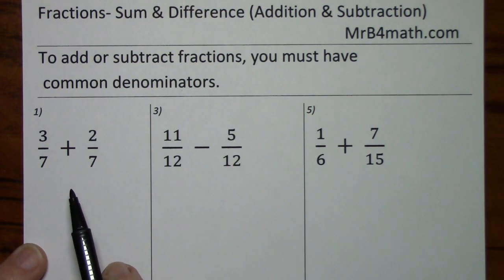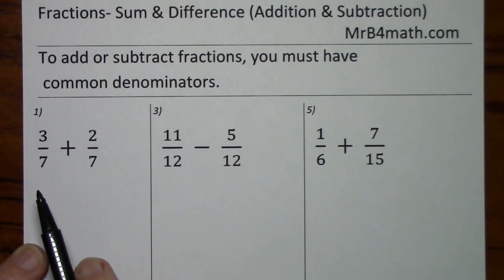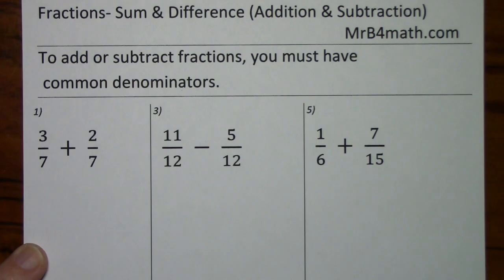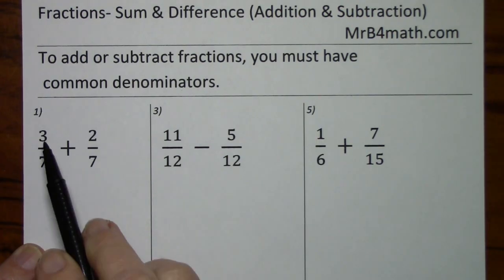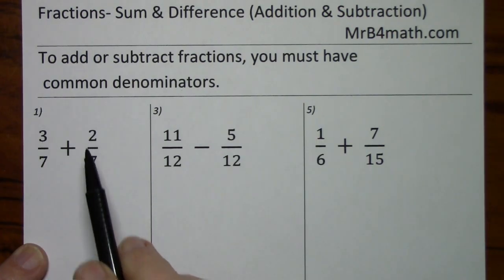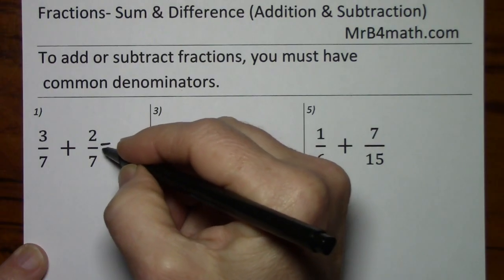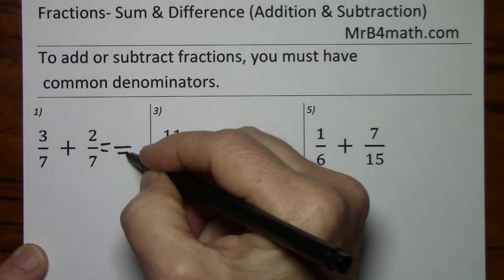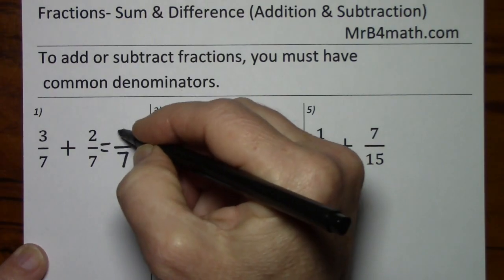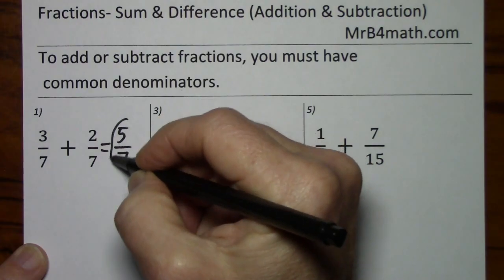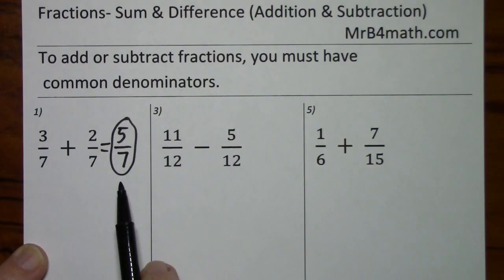To add or subtract fractions, you must have common denominators. In this case, we already have common denominators, so we only need to add the numerators and keep the denominator. So we get 5 sevenths.